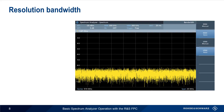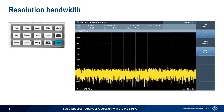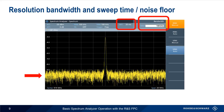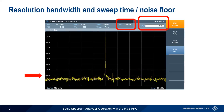Resolution bandwidth and video bandwidth are extremely important settings when using a spectrum analyzer. On the FPC, we access both resolution and video bandwidth settings by pressing the bandwidth hard key. Although the analyzer will automatically choose a resolution and video bandwidth based on the span, in most cases we'll want to manually set our resolution bandwidth. Remember that resolution bandwidth has an effect on our noise floor, our sweep time, and on our ability to resolve or separate adjacent signals. As we decrease resolution bandwidth, our sweep time will increase and the noise floor will drop. Note that decreasing the noise floor has made it possible to see very small spurious emissions that were previously not visible.